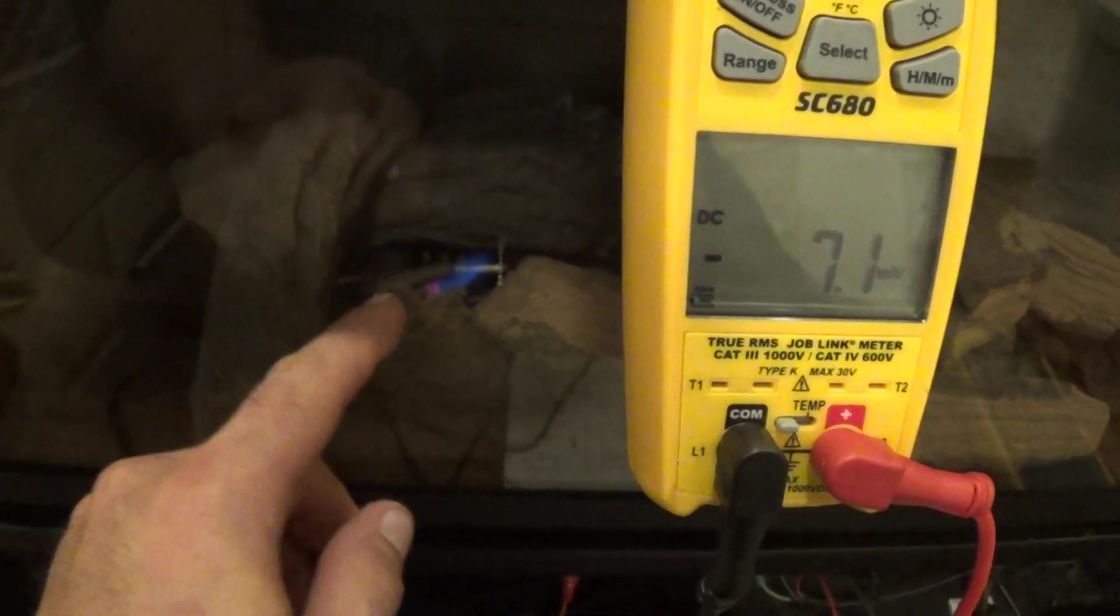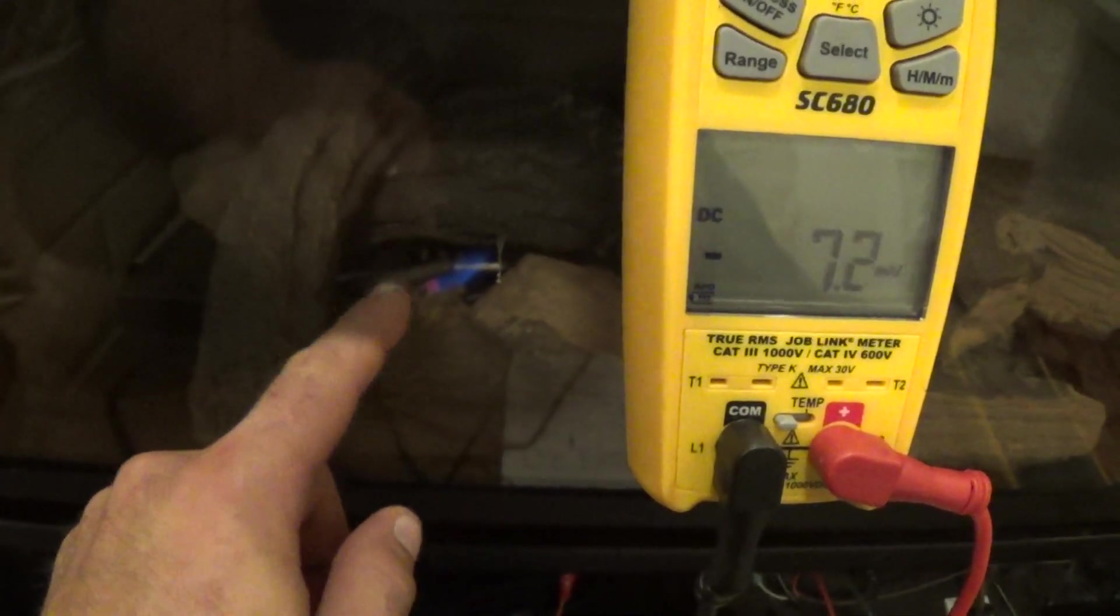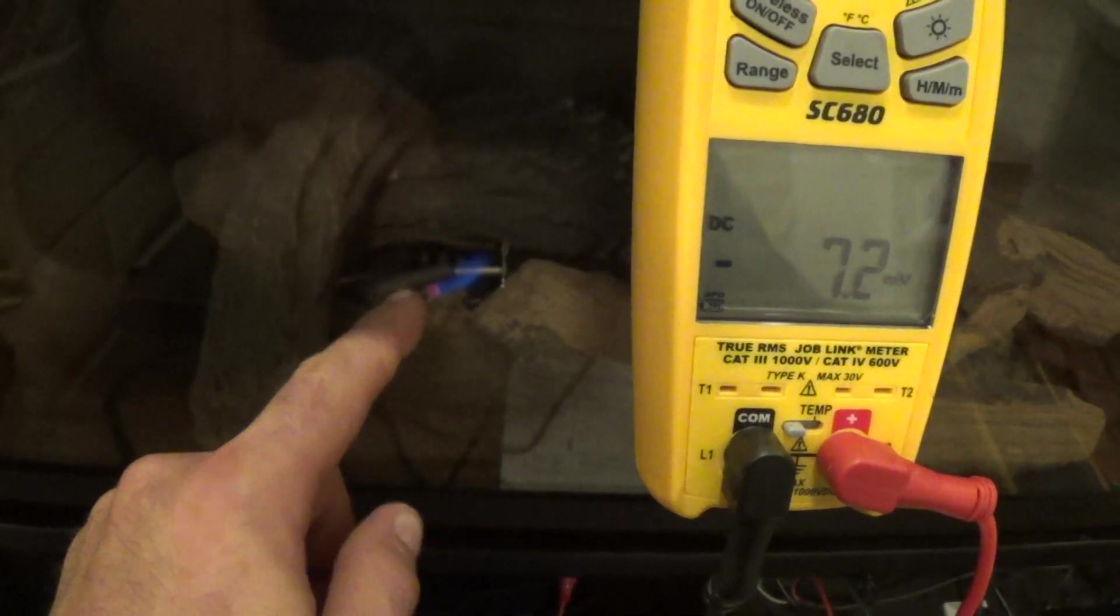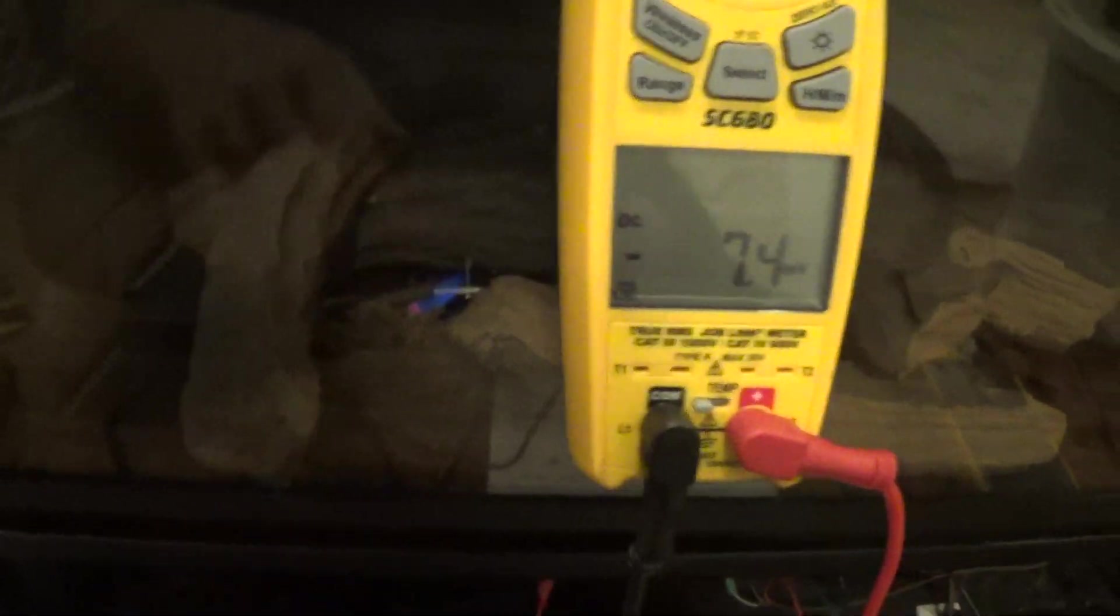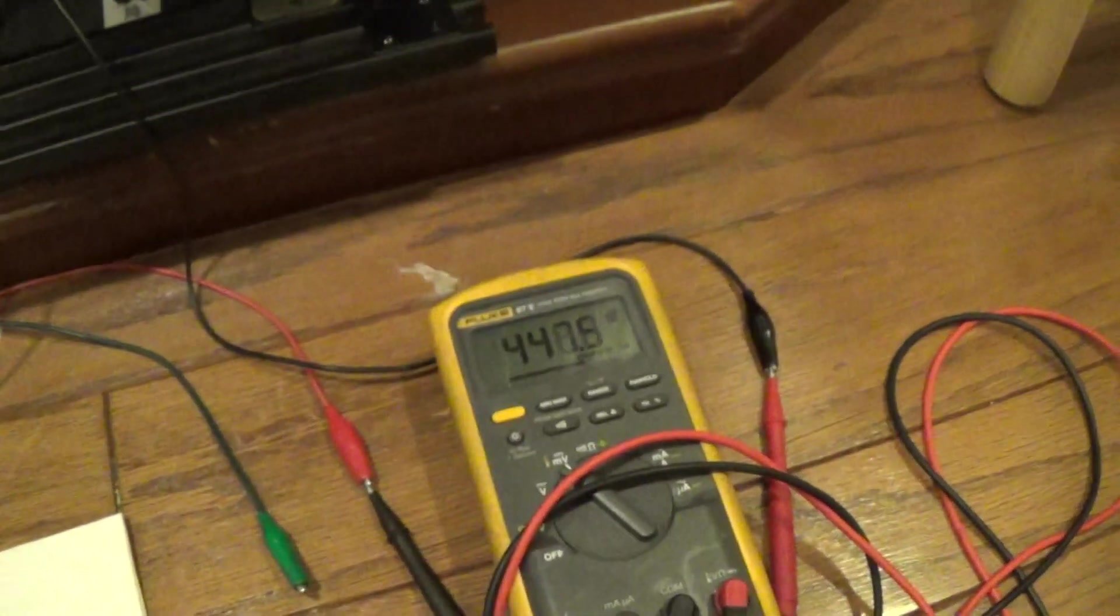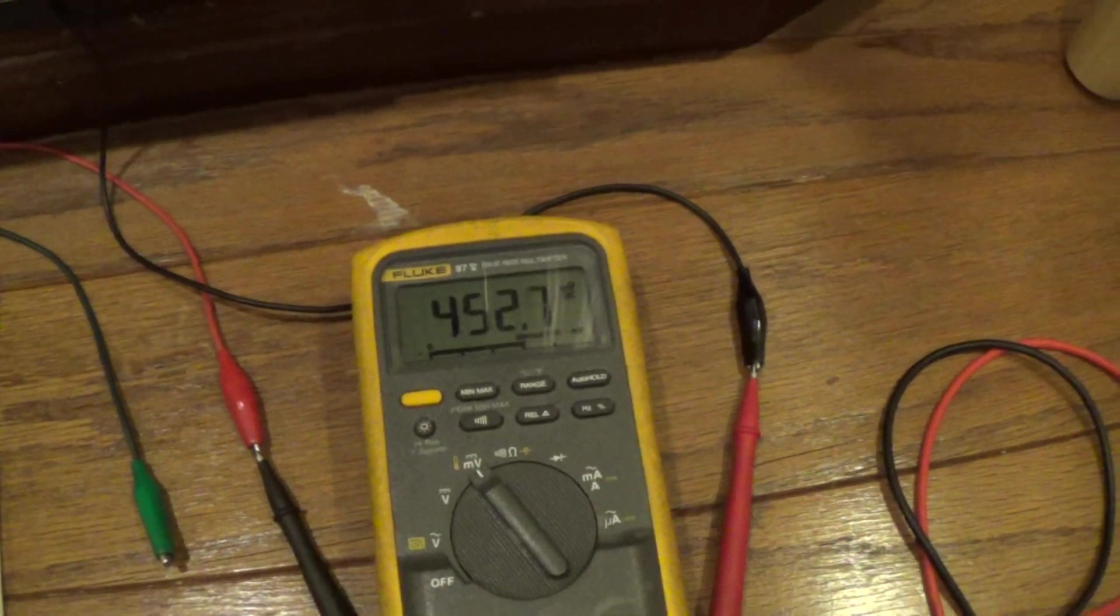If the pilot's not staying lit, either the pilot flame is not hot enough because it's clogged with dust and crap and you need to blow it out, or the thermocouple is bad. The pilot flame is also heating up the thermopile. You can see the thermopile right on top of the flame.